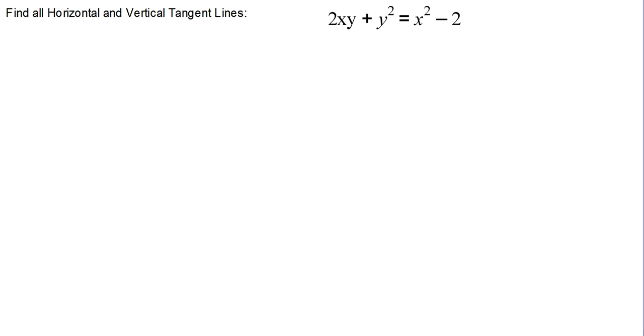In order to find the horizontal and vertical tangent lines for this implicitly defined equation, the first thing we have to do is find dy/dx. So we'll take the derivative of both sides with respect to x.